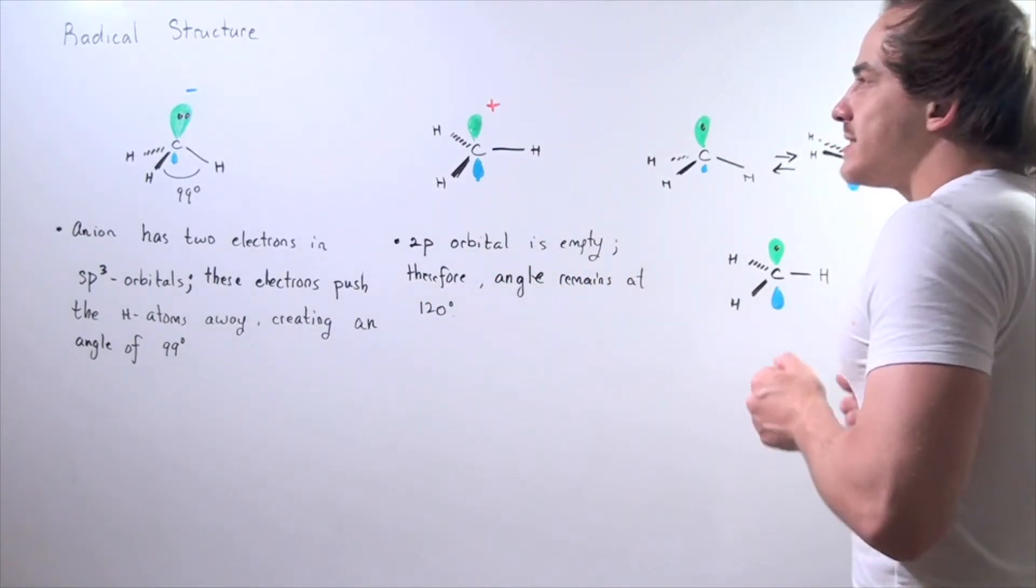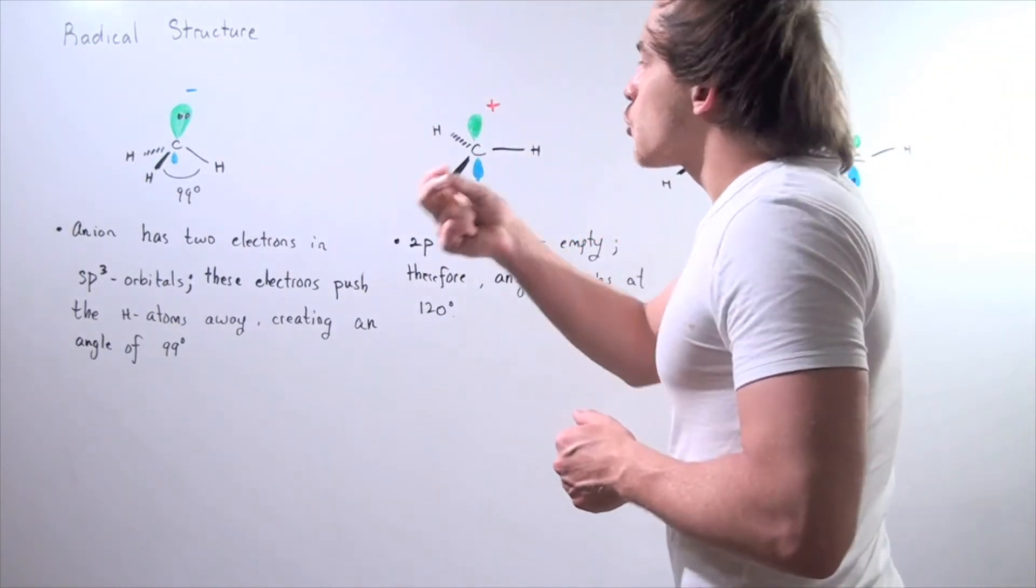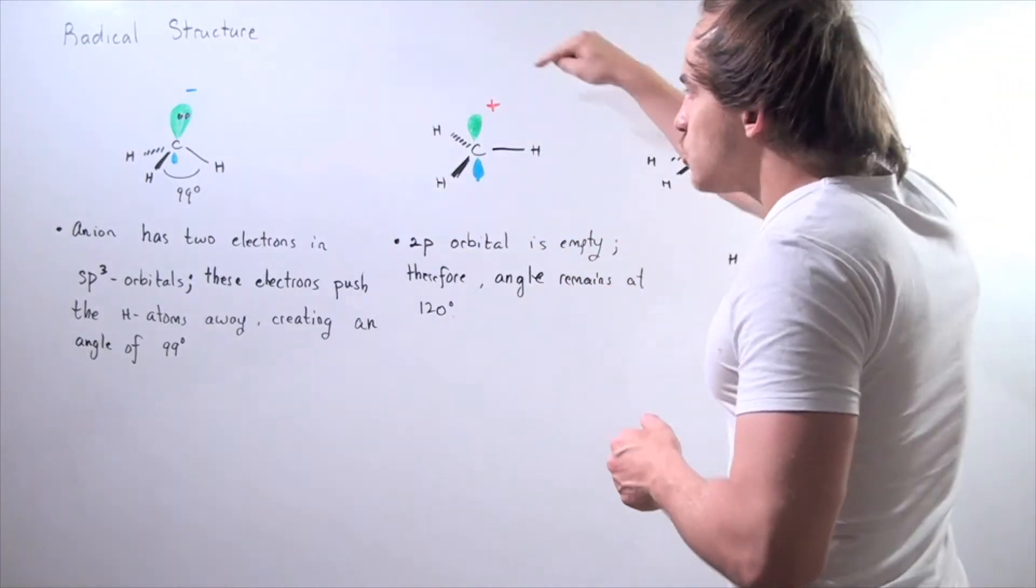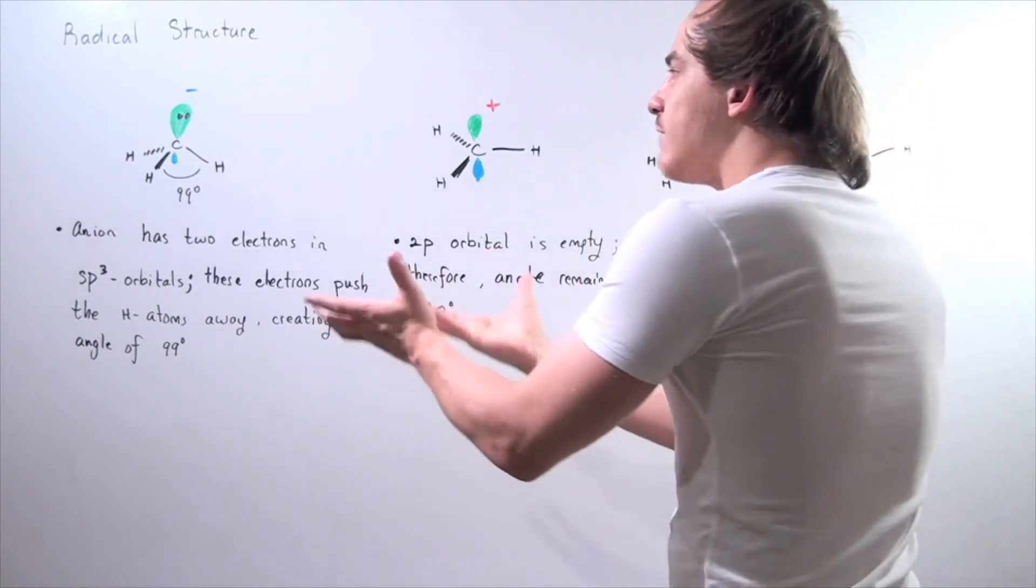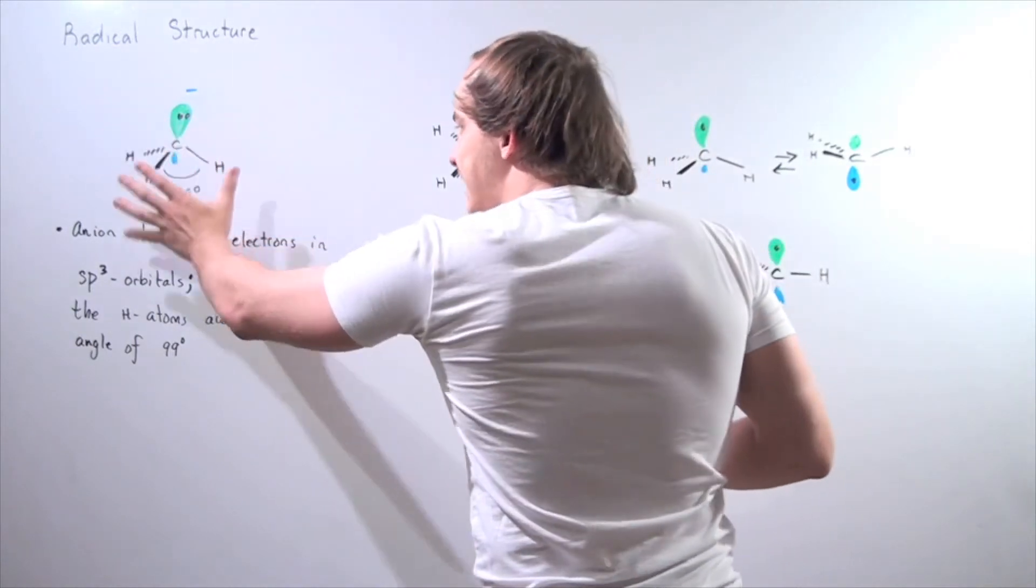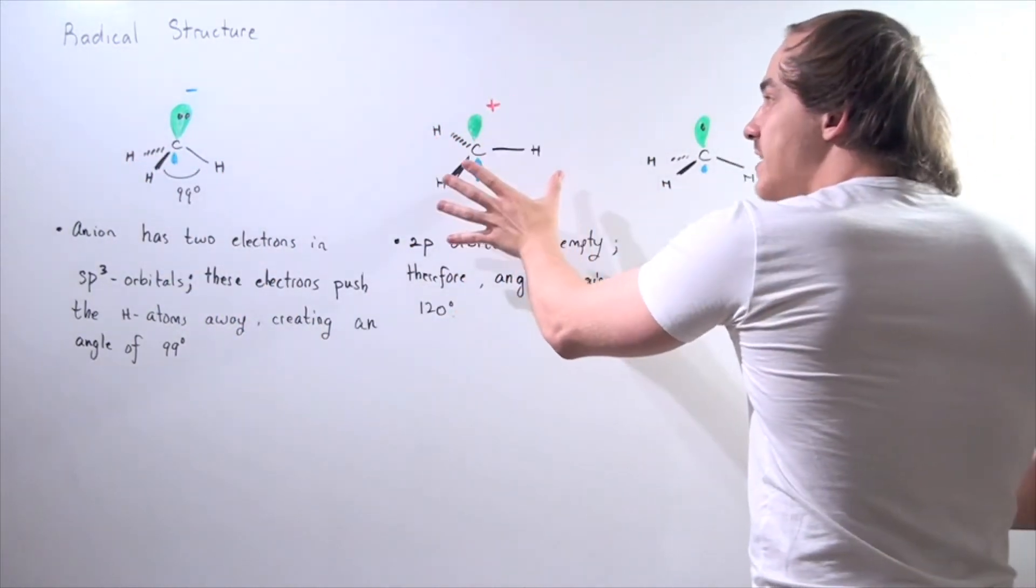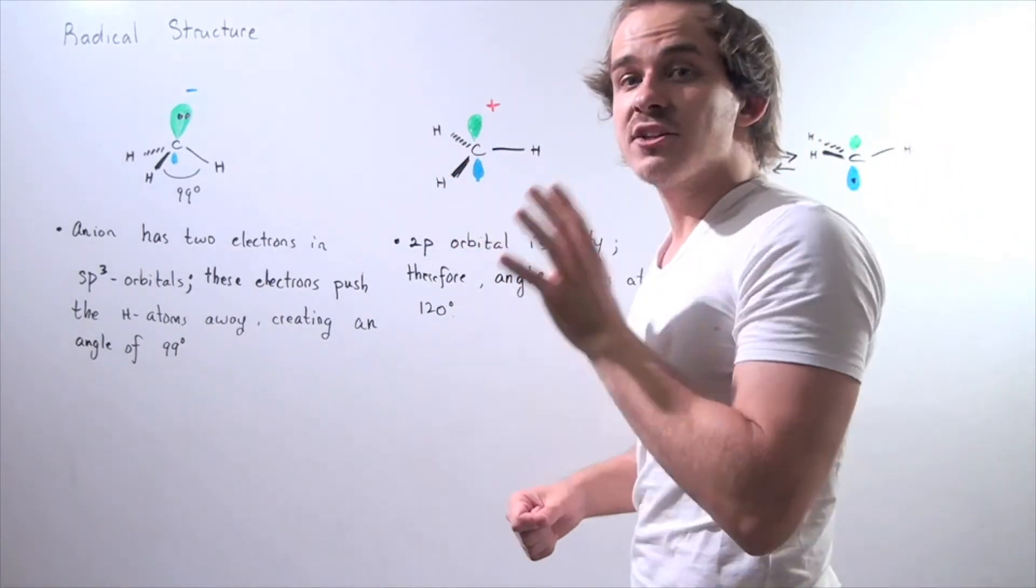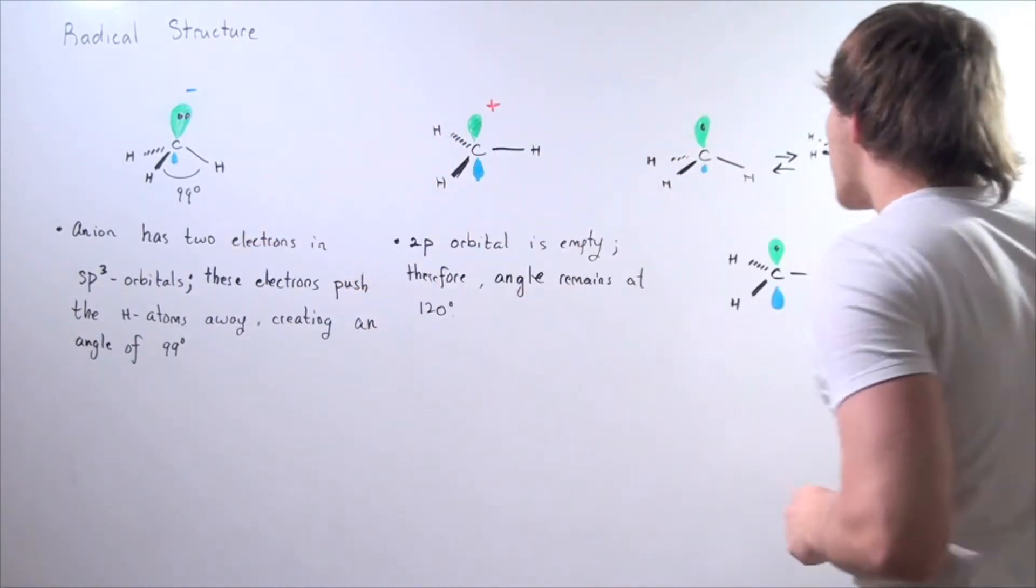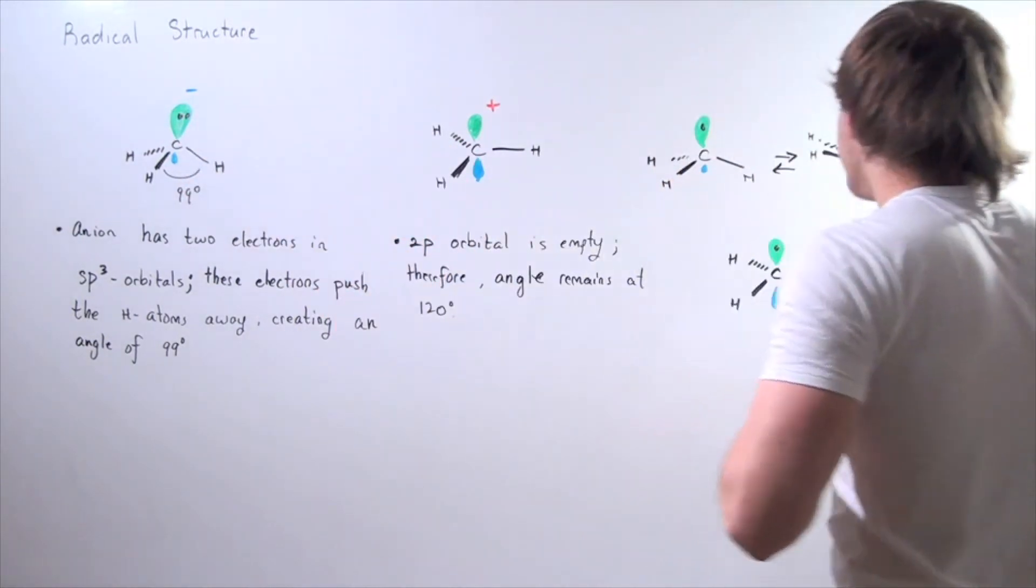Now, if we add one electron to create a radical in this orbital, we'll have a structure somewhere in between the structure of the anion and the structure of the cation. And that's exactly right - the structure of the radical is somewhere in between these two.